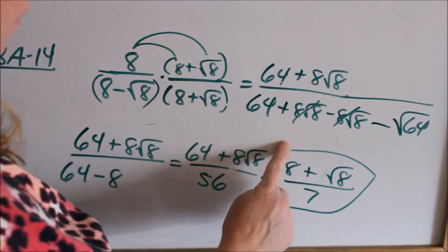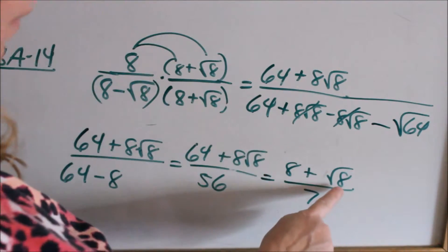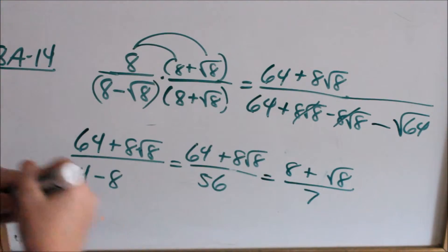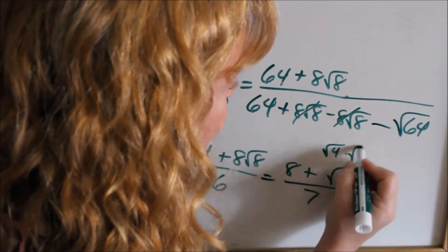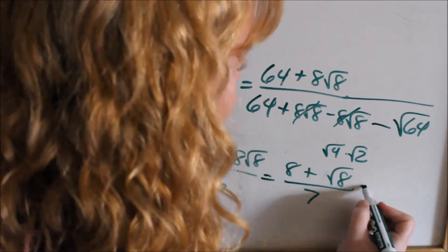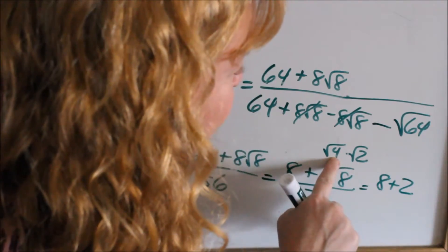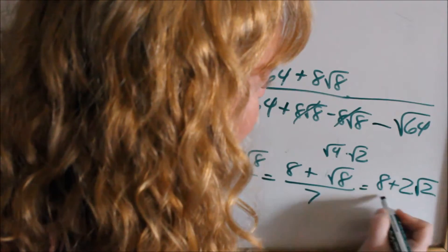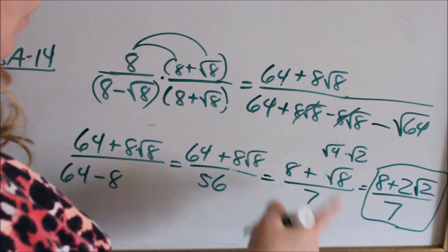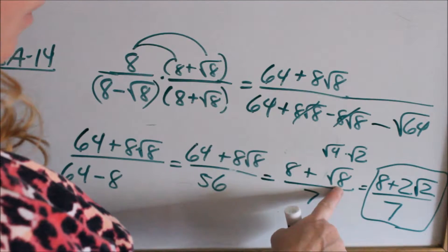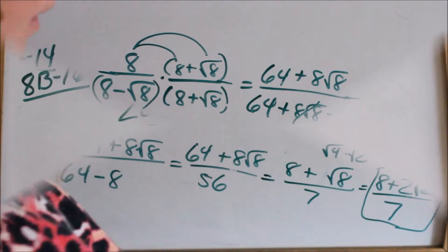Wait — I only thought this was a simplified answer, but it's not. The other thing you look for is: can you simplify your radical? Yes, square root of 8 can be broken down into square root of 4 times square root of 2, because 4 is a perfect square. So that would become 8 plus 2 square root of 2 — since square root of 4 is 2 — all over 7. Always look to see: can you reduce the whole numbers, and can you simplify the radical? This is the final answer.